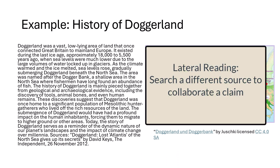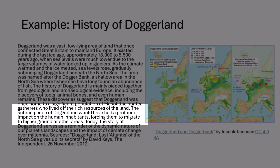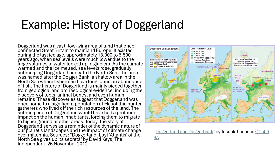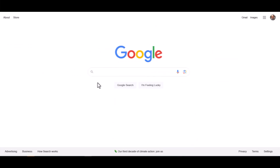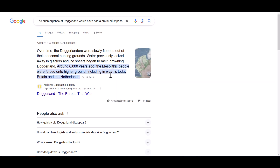Lateral reading is where you search for a claim from a different source than the one you're looking at, to corroborate a claim with your source material. It can be as easy as Googling a snippet from ChatGPT. I'll copy and look for the sentence: 'The submergence of Doggerland would have had a profound impact on the human inhabitants, forcing them to migrate to higher ground or other areas.' An article from the National Geographic Society corroborates the claim that as Doggerland sank, humans were displaced to higher areas.